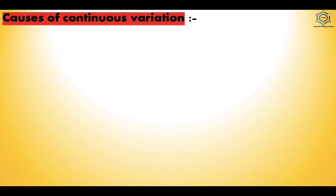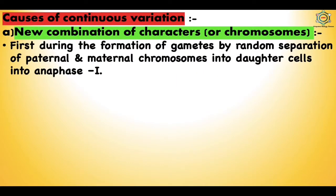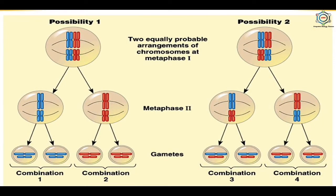There are many causes of continuous variation. The first is new combinations of characters or chromosomes: during formation of gametes by random separation of paternal and maternal chromosomes, and at fertilization by random fusion of male and female gametes. After cell division, offspring may show only parental combinations, or because of crossing over, new combinations are formed. Sexual reproduction thus provides infinite chances of new combinations of existing traits.